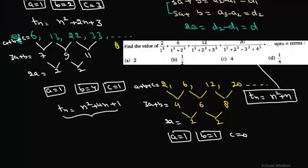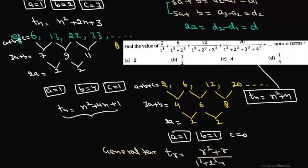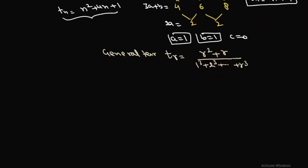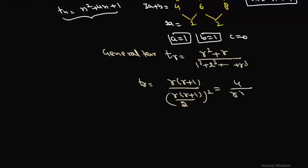To solve the question we write the general term tr. The numerator is r² + r = r(r+1). The denominator is 1³ + 2³ + ... + r³ = [r(r+1)/2]². So tr = r(r+1) / [r(r+1)/2]² = 4 / [r(r+1)], which can be written as 4 × (1/r − 1/(r+1)).